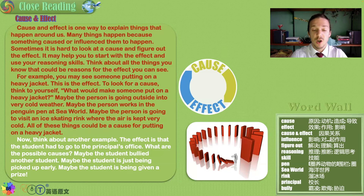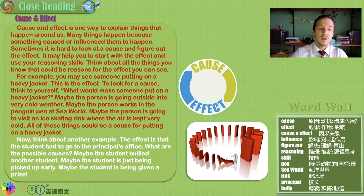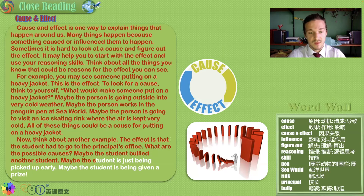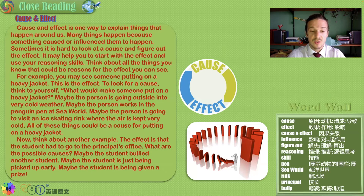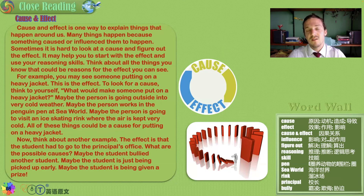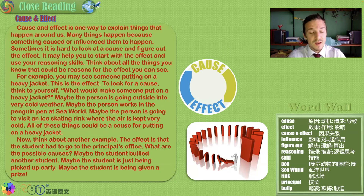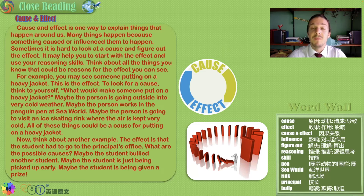All of those things could be a cause for the effect of putting on a heavy jacket. Now think about this example: the effect is that the student had to go to the principal's office. What are the possible causes? We see an effect and we ask why. Maybe the student bullied another student, maybe the student is being picked up early, or maybe the student is being given a prize. For the same effect, there can be many possible causes.